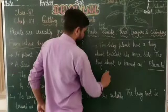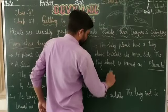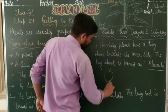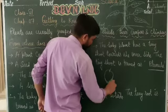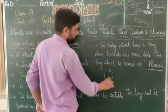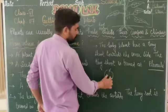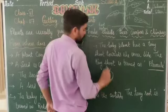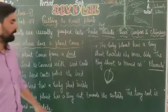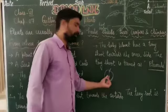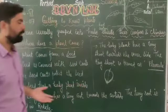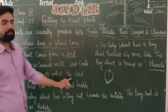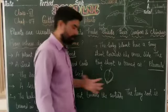A seed is covered with a seed coat। जैसे gram या chana — उस पर जो outer layering होती है वो seed coat होती है। Gram में दो parts होते हैं और outer side की layering को seed coat कहते हैं। The seed coat protects the seed — यह seed को protect करने का काम करती है।